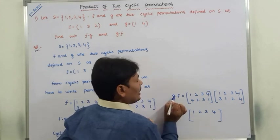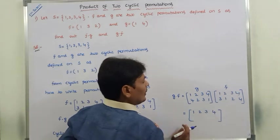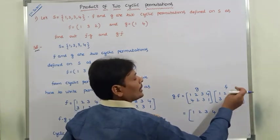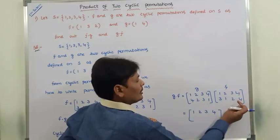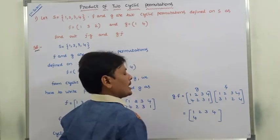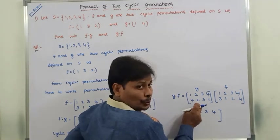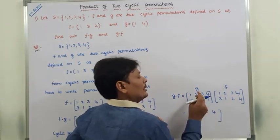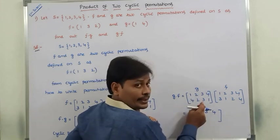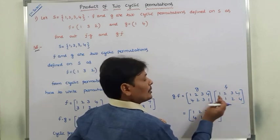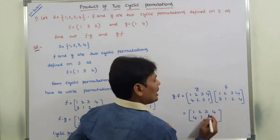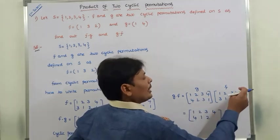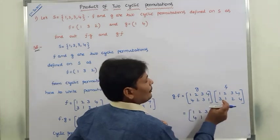For G∘F, consider element 1: in G, 1's image is 4. Go to element 4 in F — 4's image is 4. Therefore, 1's image is 4. Element 2: in G, 2's image is 2. Go to element 2 in F — 2's image is 1. Therefore, 2's image is 1. Element 3: in G, 3's image is 3. Go to element 3 in F — 3's image is 2. Therefore, 3's image is 2. Element 4: in G, 4's image is 1. Go to element 1 in F — 1's image is 3. Therefore, 4's image is 3.